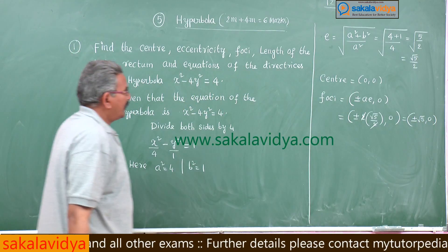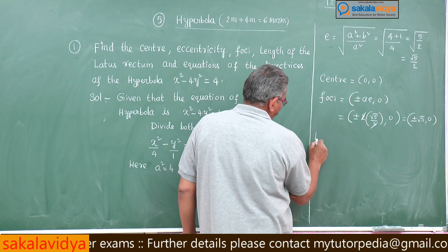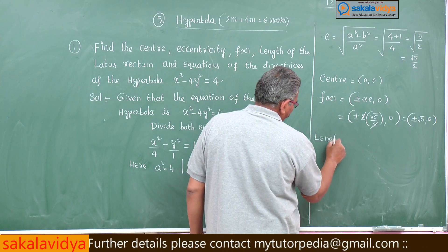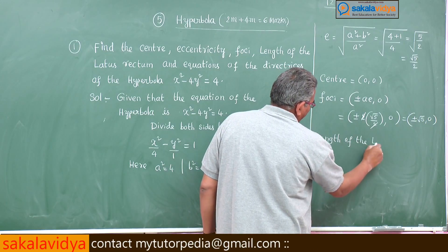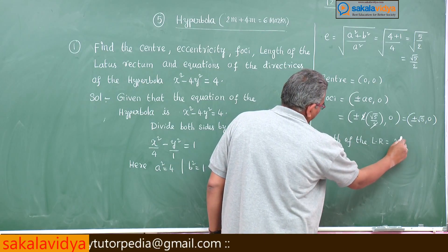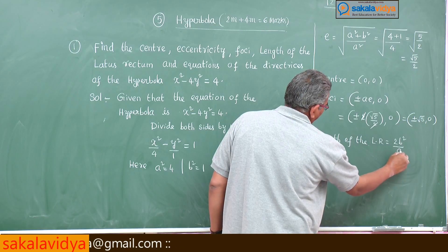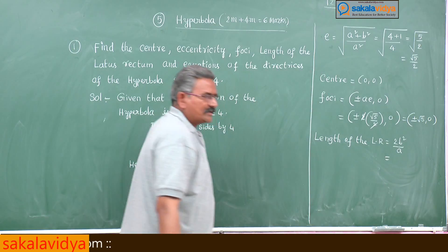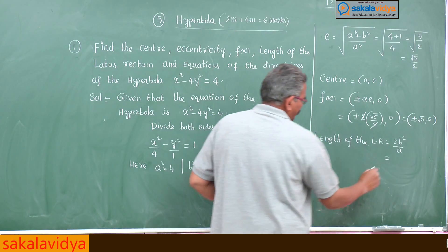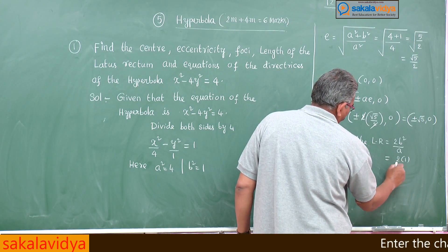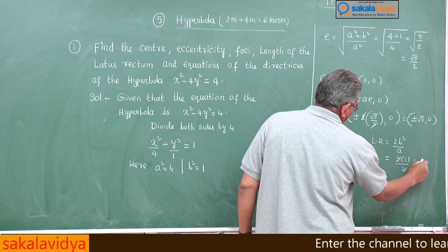Now, length of the latus rectum. Length of the latus rectum is 2b square by a. What is b square? 1. So 2 into 1 by 2, two gets cancelled, that is 1 unit.